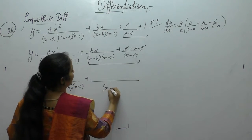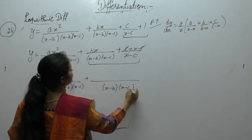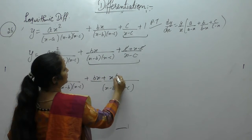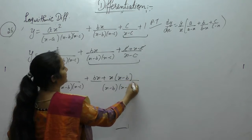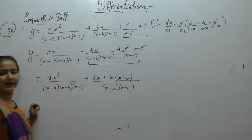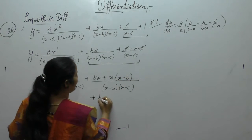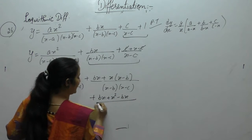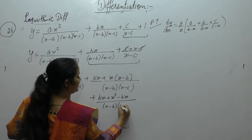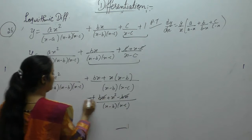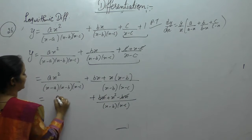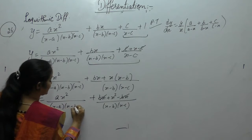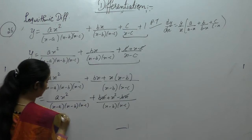Take the LCM as (x-b)(x-c). So we have bx here; x into (x-b) is needed, so (x-b). What we get is bx + x² - bx over (x-b)(x-c). Now solve the two terms with (x-a), (x-b), (x-c).